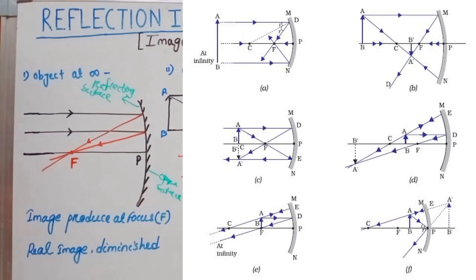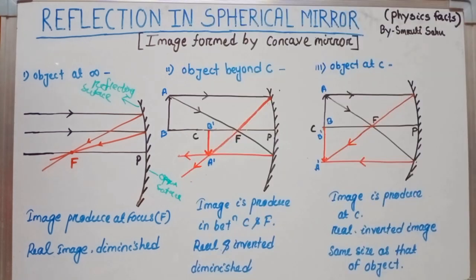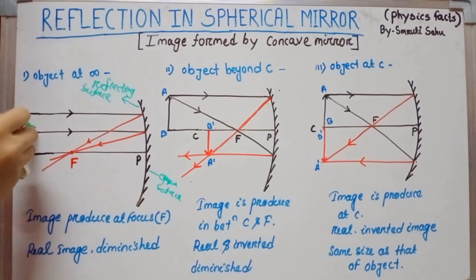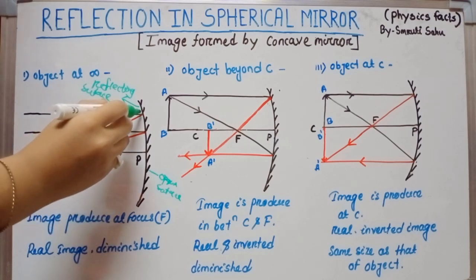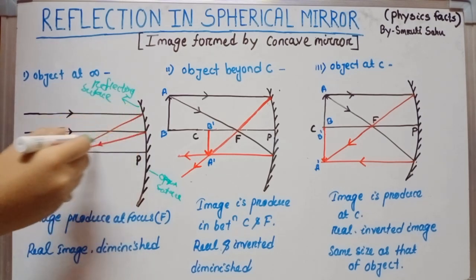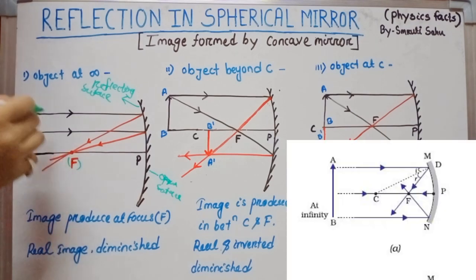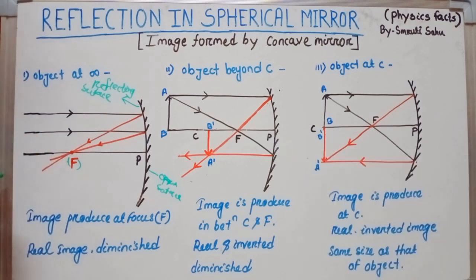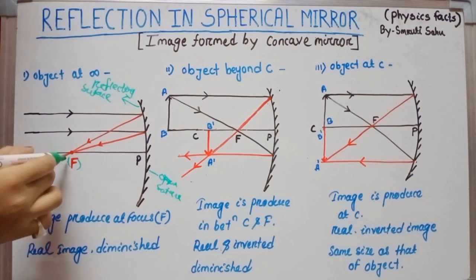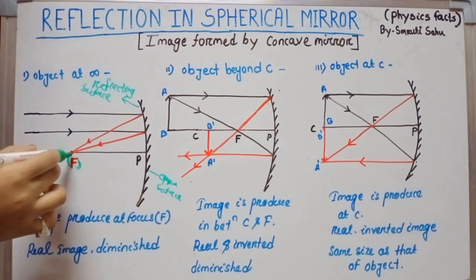We consider 6 different positions of an object and what is the position, nature, and size of the image produced by a concave mirror. The first case: object is at infinity. Incident rays come parallel to the principal axis, and after reflection they meet at focus. So the image is produced at focus — it is a real, diminished point image.